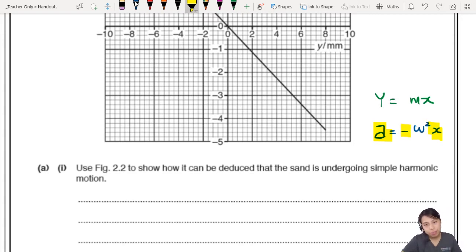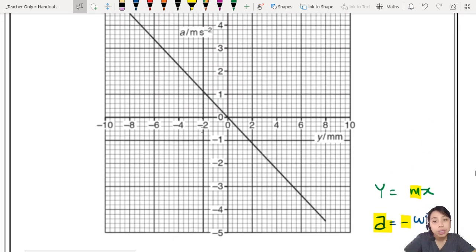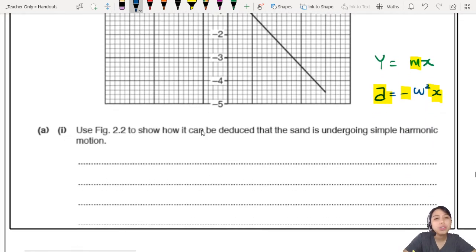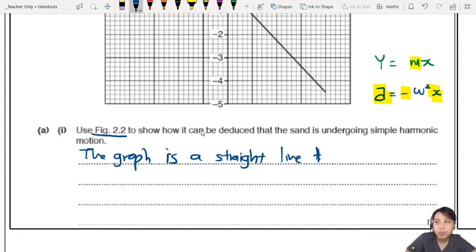What this means is, you need to prove that this graph up here is a straight line. Based on the equation y equals mx plus c, a straight line. And also, you need to show that this negative is there. What is the negative? Negative is in the gradient. So how do we do that?